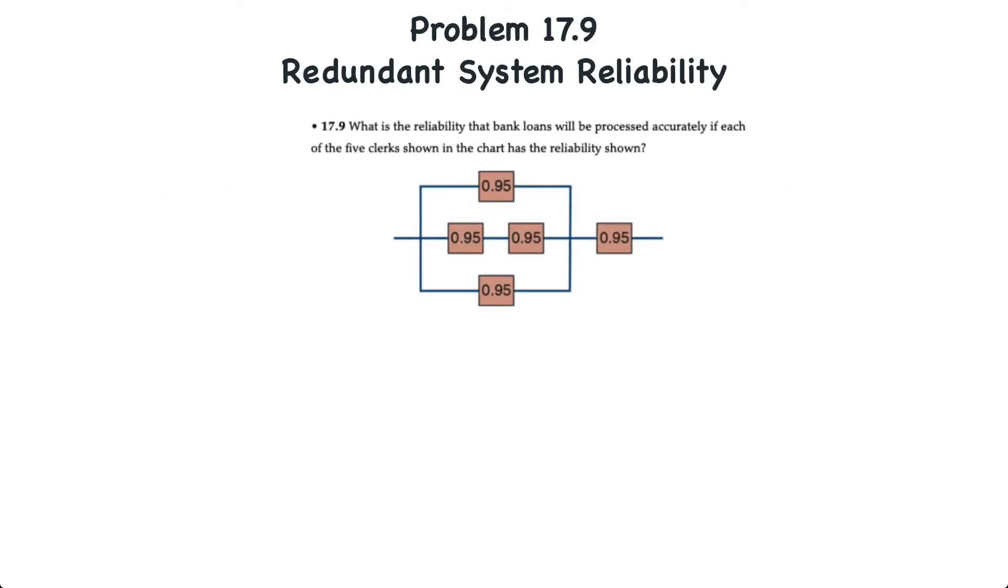We'll start with problem 17.9. Here, we're asked to determine the reliability that bank loans will be processed accurately if each of the five clerks shown in the chart has the reliability shown.